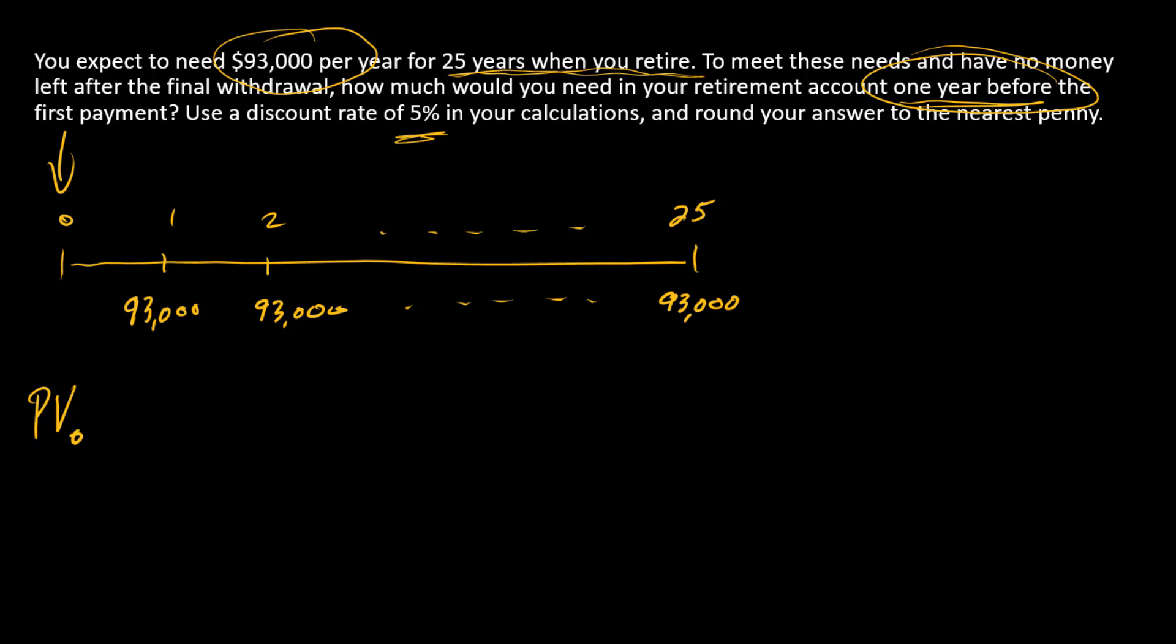We're looking for a present value at time zero. This stream, since it's a constant cash amount evenly spaced for a finite number of periods and the first payment is one period from now, we have an ordinary annuity. All of our annuity formulas and programs are going to work perfectly. We just need to find the present value of an ordinary annuity.